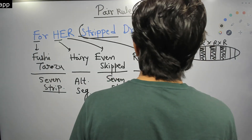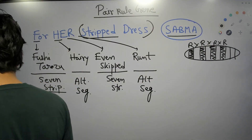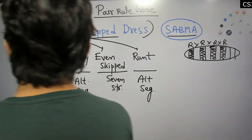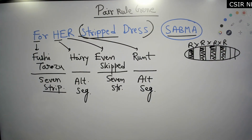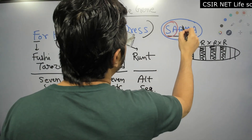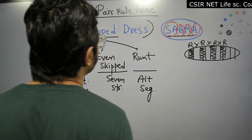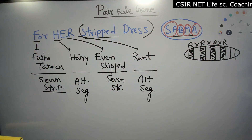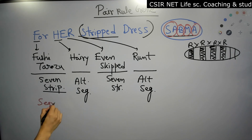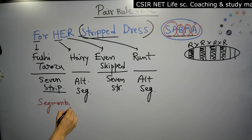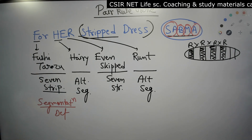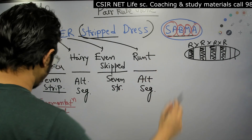The name 'Sabma' helps us remember the role of these four pair rule genes and the defects caused by their mutations. S-B-M-A gives four different defects. Defect number one corresponds to S: segmentation defects will originate if there is any defect in Fushi tarazu.